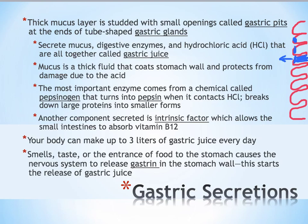The gastric juice includes mucus, which is very thick, and its job is to coat the stomach wall for protection. One of the other major substances released by the stomach wall is hydrochloric acid, or HCl. Hydrochloric acid is an extremely powerful protein digester. Without mucus protecting the stomach wall, the hydrochloric acid would digest the stomach itself, which would cause pretty significant problems.